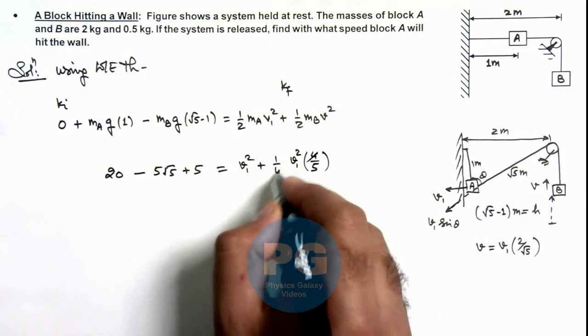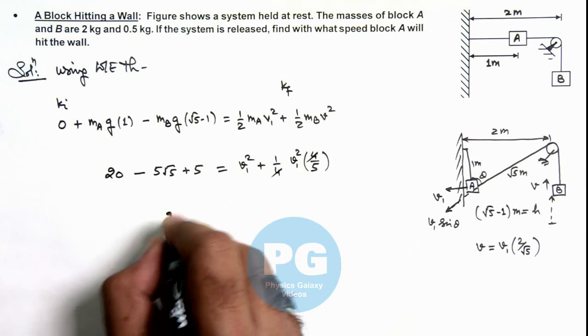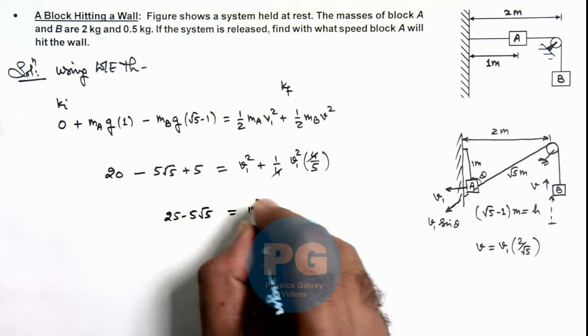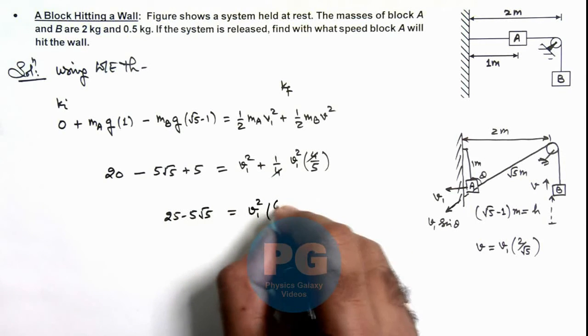And on left hand side, this will be 25 minus 5 root 5, and on right hand side it is v1 square multiplied by 1 plus 1 by 5, which is 6 by 5.